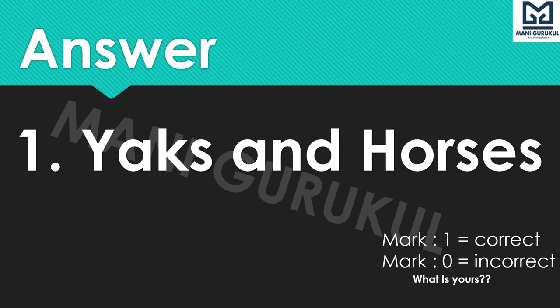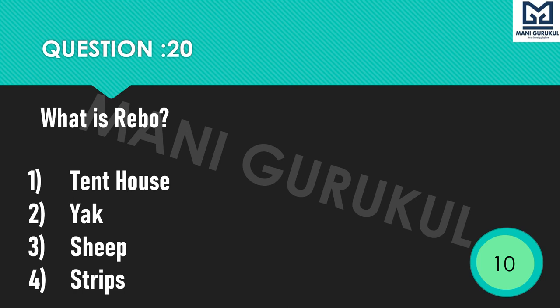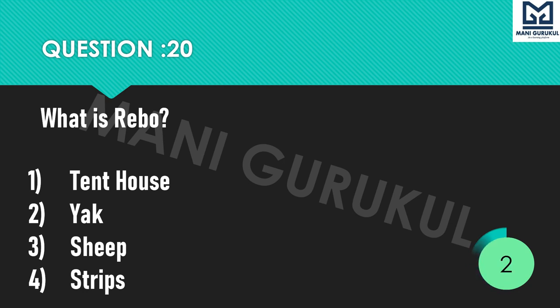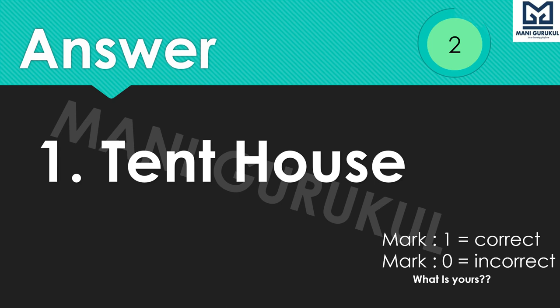Question 20: What is a Rebo, according to the chapter? Options: 1st Tent House, 2nd Yak, 3rd Sheep, 4th Stripes. What is Rebo? Time's up. Answer is 1st: Tent House.